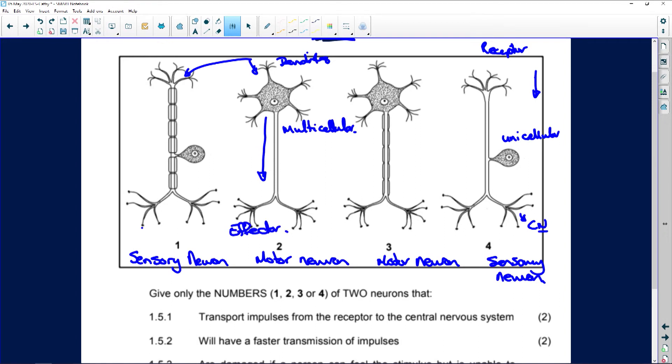Okay, so what is different? Why would they put two motor neurons and two sensory neurons? Well, this sensory neuron and this motor neuron contain this extra layer here. And those extra layers are called myelin sheaths.